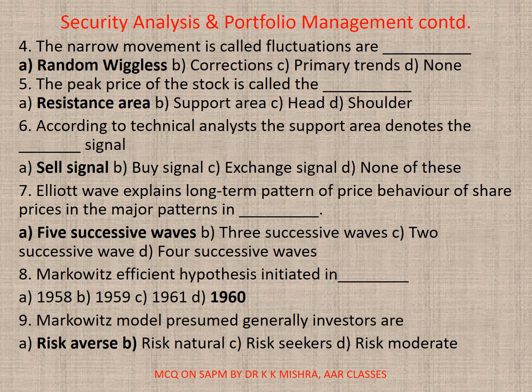Question 4: The dynamic movement called fluctuations are — correct option is A — random wiggles. Question 5: The peak price of the stock is called the resistance area — correct option is A. Question 6: According to technical analysts, the support area denotes the — correct option is A — sell signal.